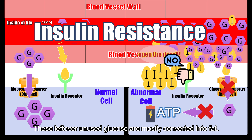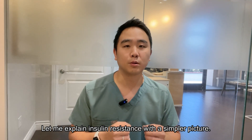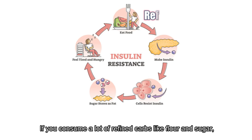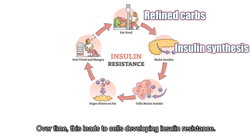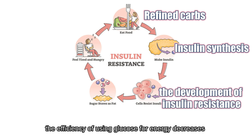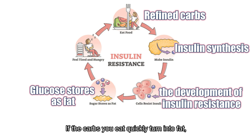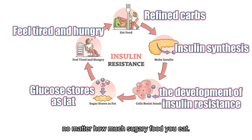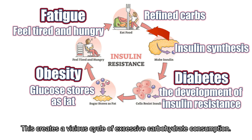These leftover unused glucose are mostly converted into fat. If you consume a lot of refined carbs like flour and sugar, insulin production increases significantly. Over time, this leads to cells developing insulin resistance, decreasing the efficiency of using glucose for energy while increasing the conversion of glucose to fat. If the carbs you eat quickly turn into fat, you will always feel tired and hungry no matter how much sugary food you eat. This creates a vicious cycle of excessive carbohydrate consumption.